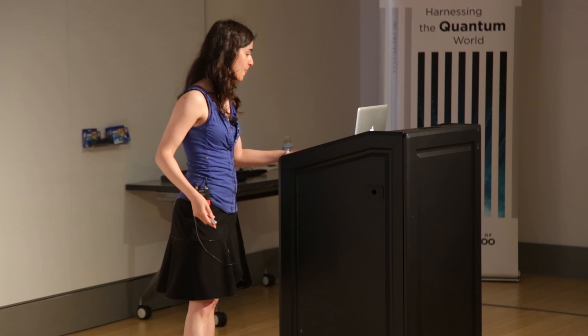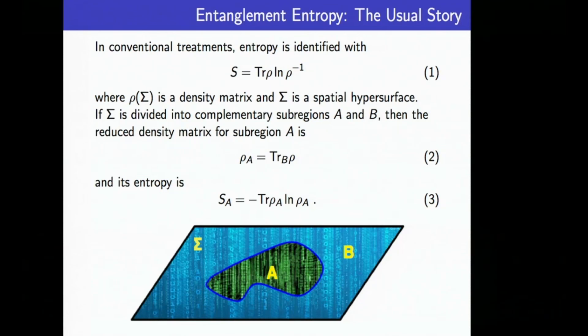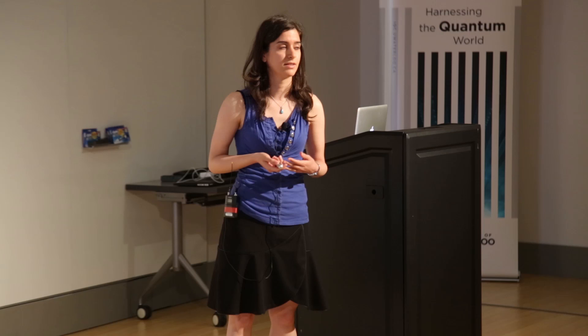Let me quickly review what the traditional definition of entanglement entropy is. The usual story is that the entropy is identified with this expression involving a density matrix rho evaluated on a hypersurface sigma. If we take sigma and divide it into two complementary regions like region A and B, and if we trace out the degrees of freedom in one of these regions, we end up with a reduced density matrix for region A. If we plug it back in, we get an entropy which is referred to as the entanglement entropy between region A and region B if the original density matrix was pure.